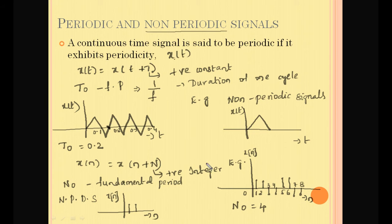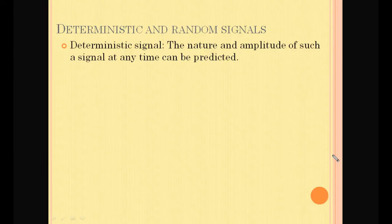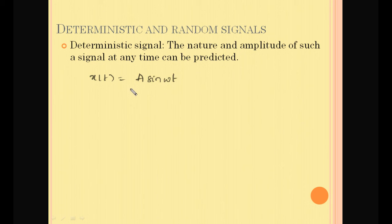Now let us move on to the next type of signals — deterministic and random signals. From the word deterministic, we can understand that the nature and amplitude of such a signal at any time can be predicted in advance. That means the signals are regular and characterized mathematically. For example, x(t) = A·sin(ωt); the signal varies sinusoidally with amplitude A. Such signals are called deterministic signals — their value is predictable at any instant of time.